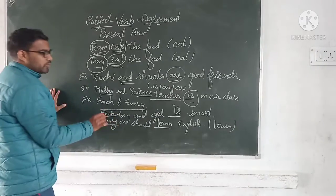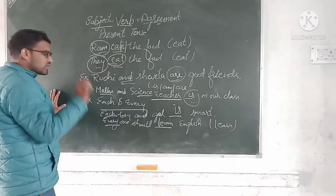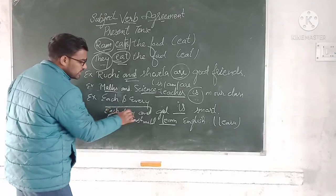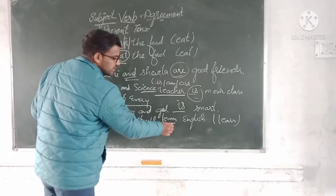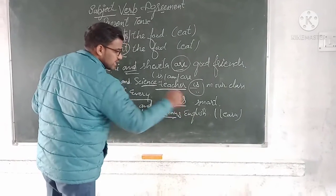Whenever there is 'each and every,' we always use the singular form of the verb. So, each boy and girl is smart, and everyone should learn English.